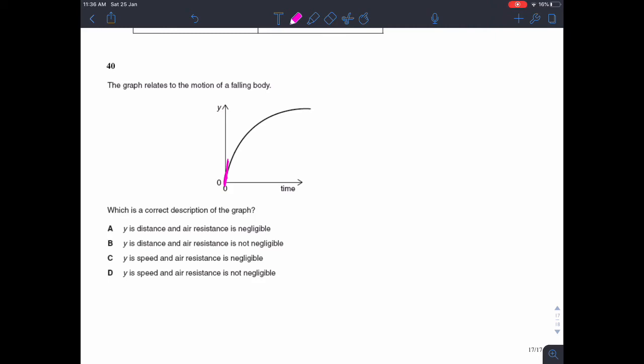So if this was a distance time graph, then the gradient of that graph would be speed. Now it's not going to be slowing down. If that was a speed, if that was a distance time graph and the gradient was speed, then this object that was falling would be slowing down. So that's not going to be the case for a falling body. A falling body is going to speed up. So I would say it's not a distance time graph.